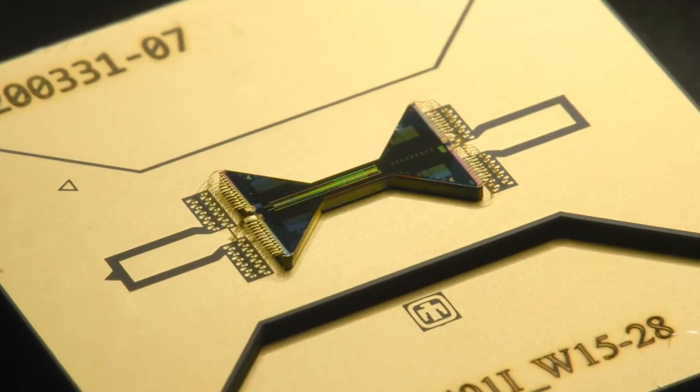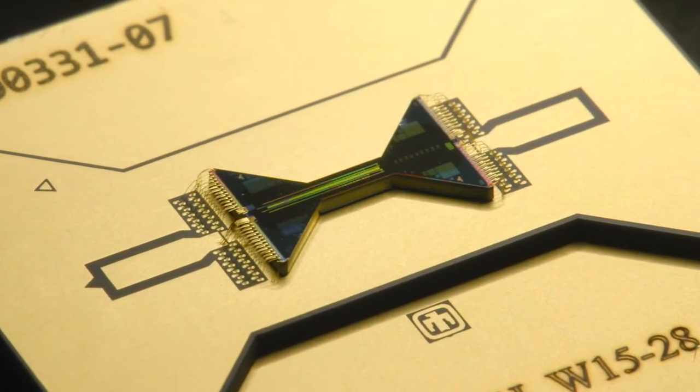QScout is based on trapped ions. We've trapped individual ions about 70 microns away from a small chip that's similar to a computer chip and we're addressing them with laser beams to control an electron to solve a useful problem. I mean, how amazing is that?